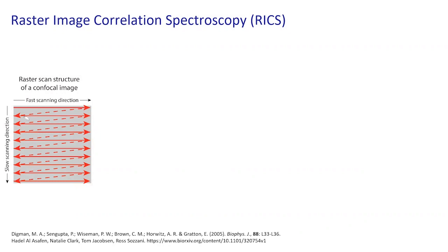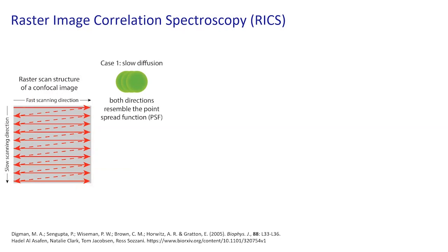In a confocal microscope you have two different time scales: a fast scanning direction and a slow scanning direction. Two pixels in the same row differ in imaging time by on the order of a microsecond, but two pixels in different rows differ by on the order of a millisecond. This is useful because we can build a two-dimensional autocorrelation function with two different time shifts — a fast tau and a slow tau.